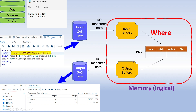WHERE statements are always applied before your data values are entered into the PDV. That means before reading a value into the PDV, the WHERE condition is applied, which is why WHERE statements are very fast compared to IF statements. With IF statements, data is first read into the PDV, and after that any subsetting or condition is applied — that's why IF statements are a little slower than WHERE statements.